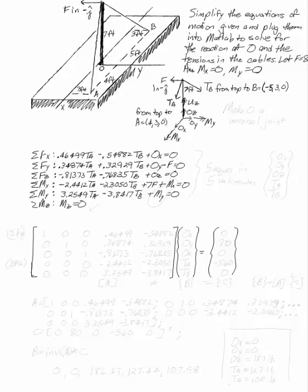Take the tower we had before and simplify the equations of motion and plug them into MATLAB to solve the reaction at O and the tensions of the cables. We want to let F be 80 pounds, the magnitude of that force at the top, and the moments in X and Y be zero. These are essentially redundant moments anyway.